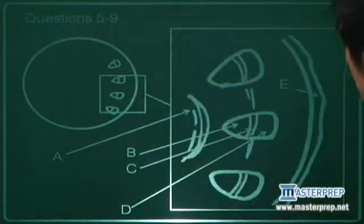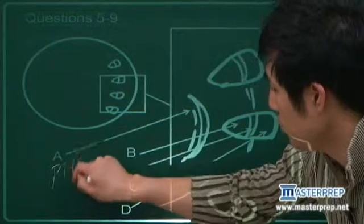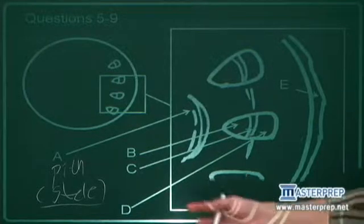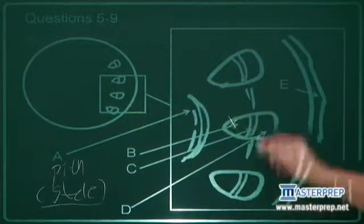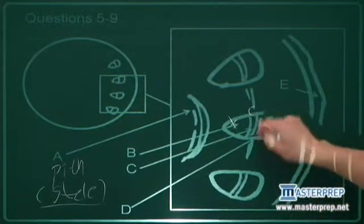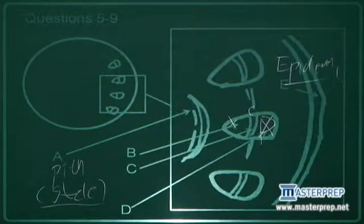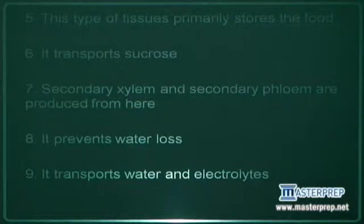So A, this is pith or stele. This is the part that stores the nutrients and at the same time supports the stem. And B, this is xylem, this is cambium, this is phloem, and here this is epidermis, which is kind of bark here. Number five, this type of tissue primarily stores the food. It's talking about the stele or pith. That's A.